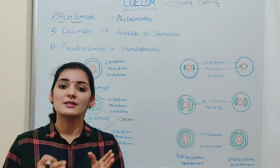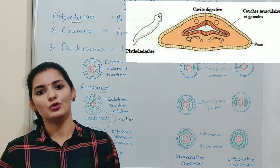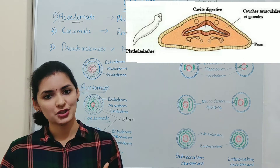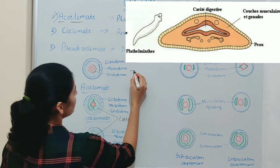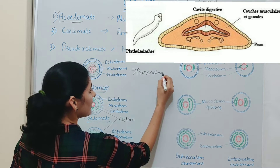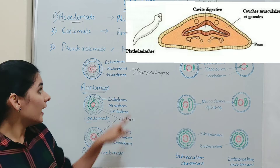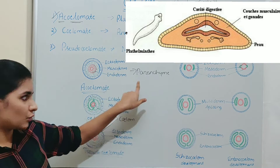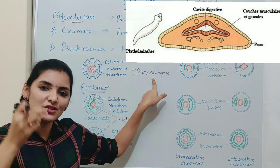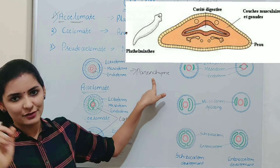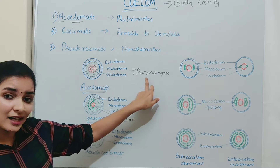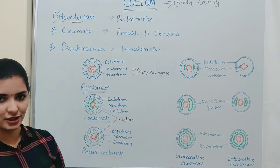Then what will be present between the gut and the body wall? In the case of adults, the space between the digestive tube and the body wall is filled by tissue known as Parenchyma. This Parenchyma is derived from embryonic ectoderm. It is a connective tissue present between the central digestive tube and the peripheral body wall in acoelomate organisms.